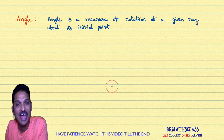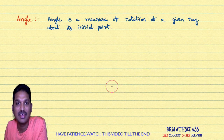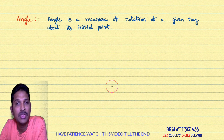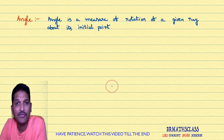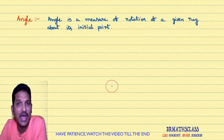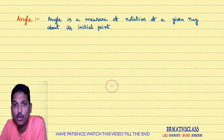Hi friends, I am Balaji Rao. Welcome to BRMAX class. This is the first class in Trigonometry. We frequently use the word angle in Trigonometry. So in this class, we will learn about what is angle, what is vertex of an angle, what is initial side of an angle, what is terminal side of an angle, what is positive angle, and what is negative angle. This class is all about angle.